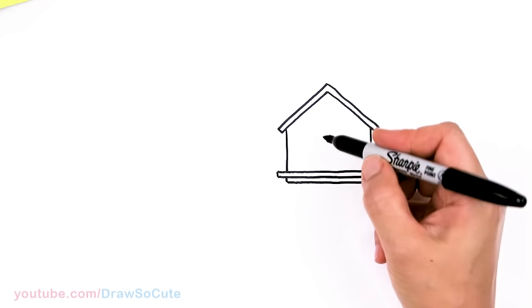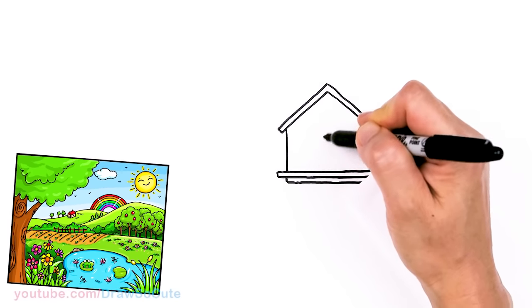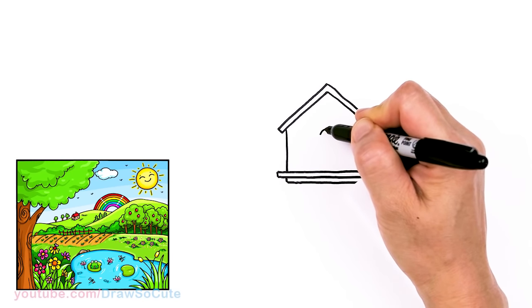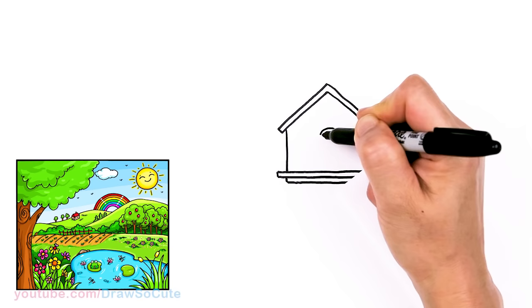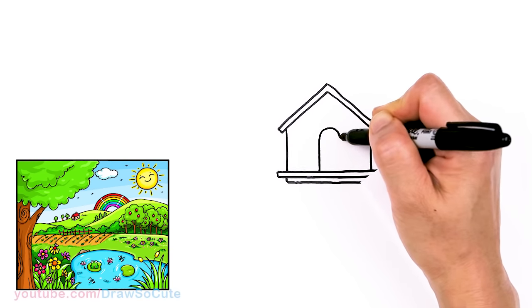Now that we have that, let's put in some doors and windows. So I'm going to come about right here and just draw a curve. I'm just going to draw a curve right there and bring it straight down for our door. So right in the center.